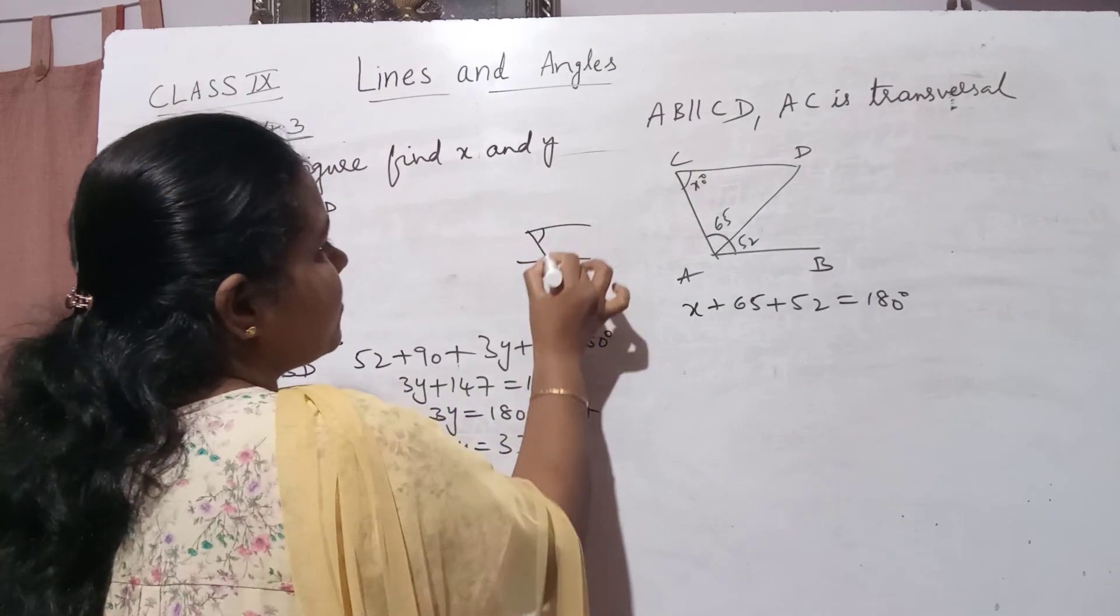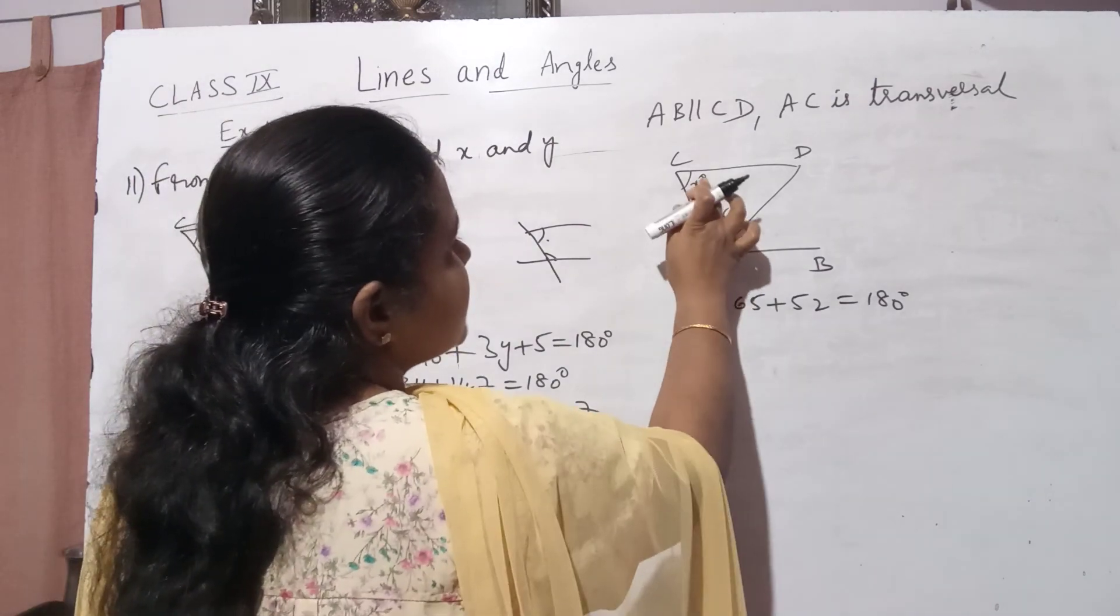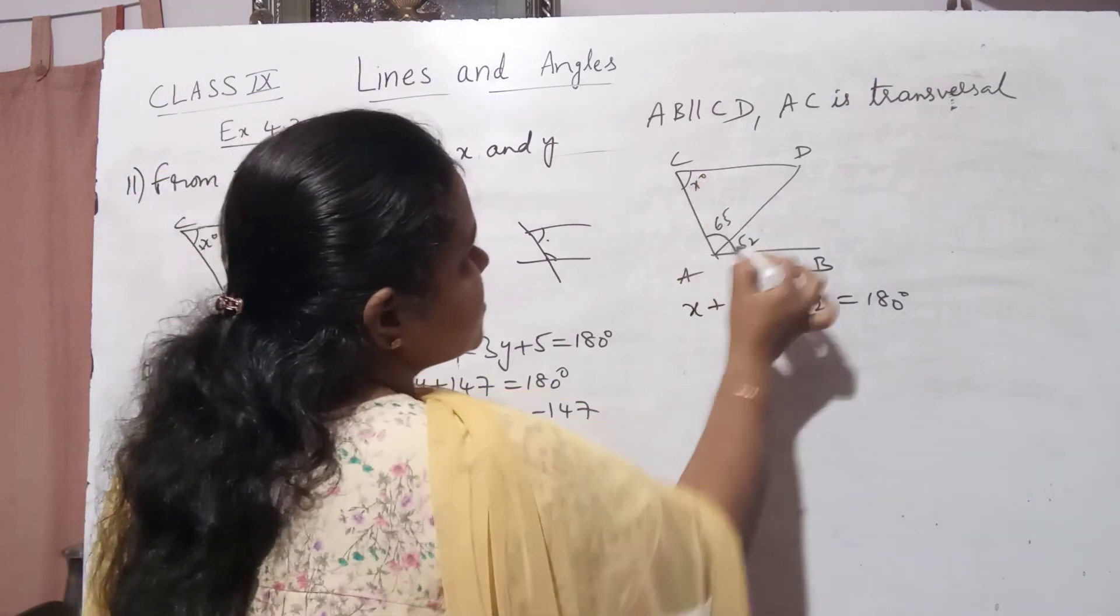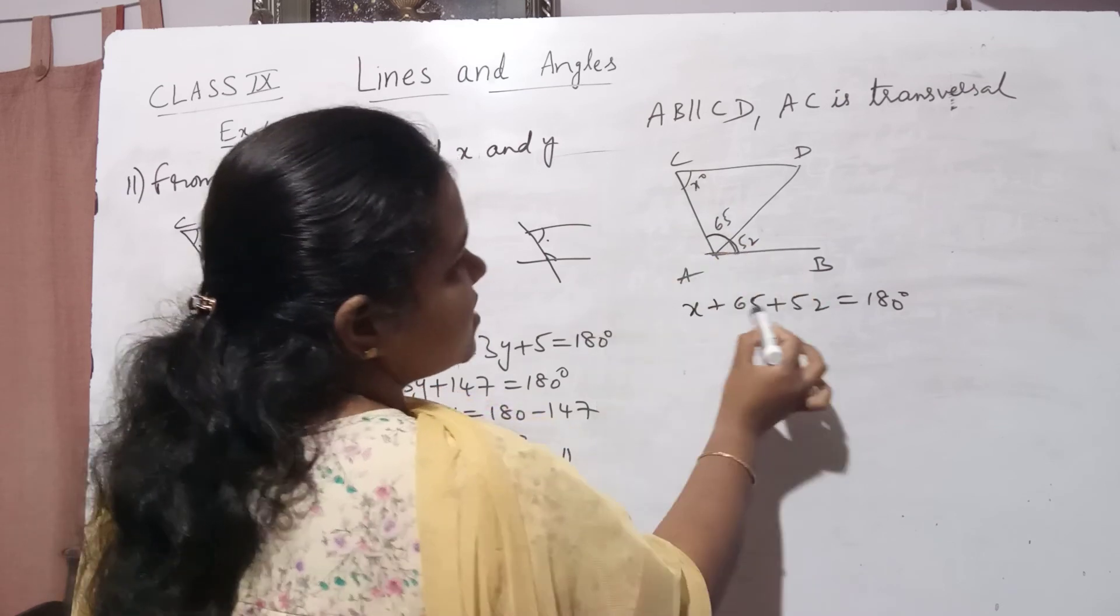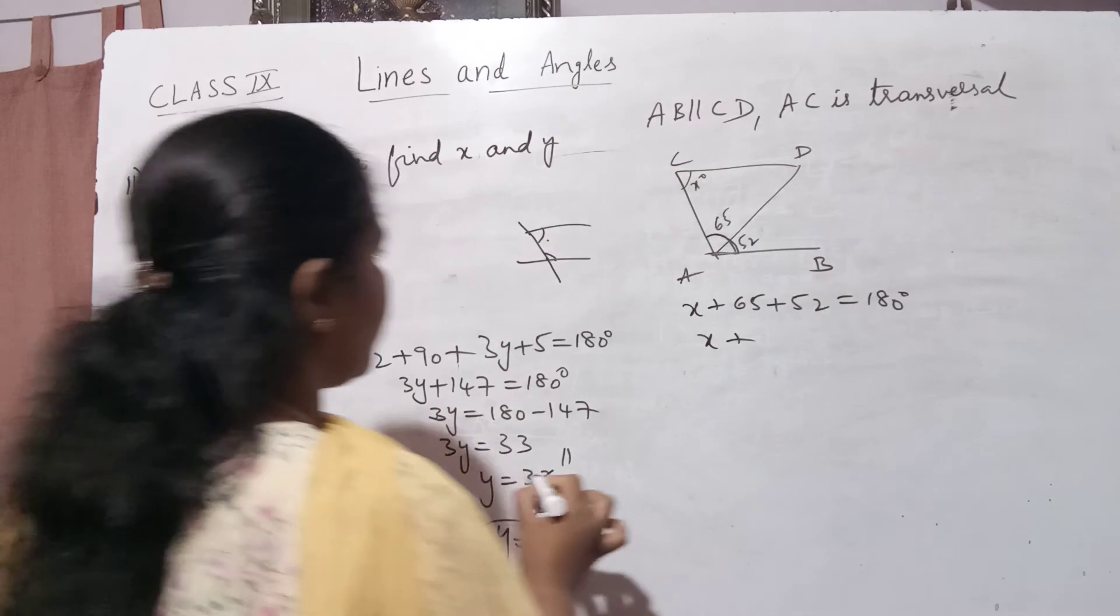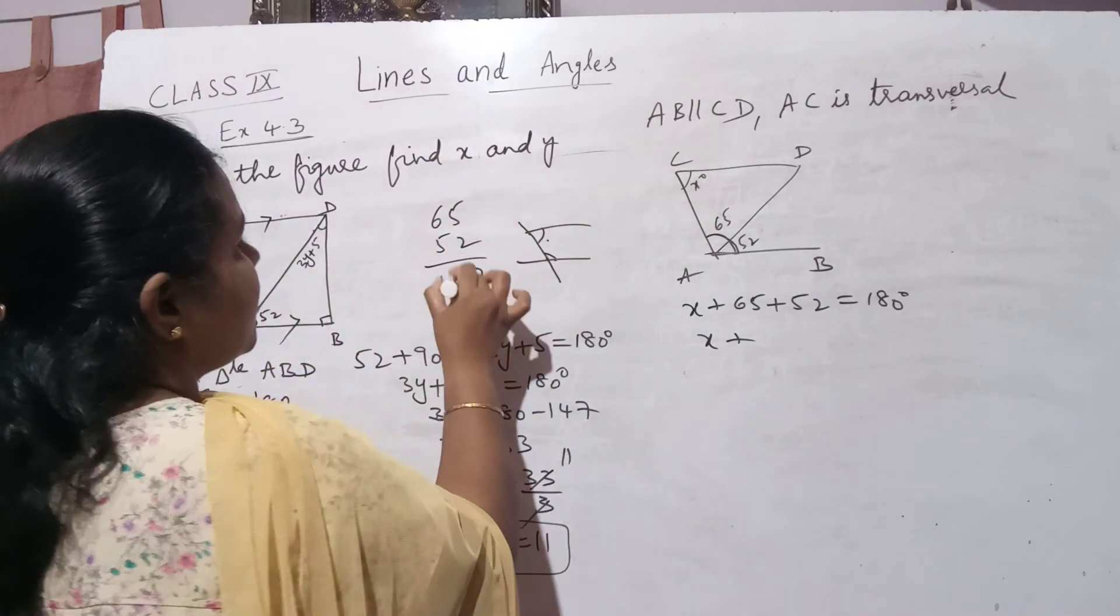The interior angles formed sum is 180 degrees. We are doing x, this is x degrees. x plus the interior angle sum, because this is the transversal, the entire thing we have to do: 65 plus 52 is 180. So x plus how much is 65 plus 52? 65, 52, we'll get it as 117.